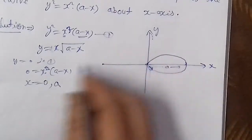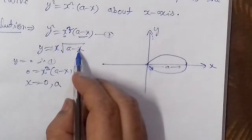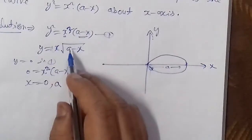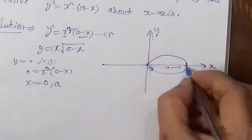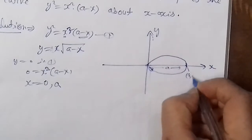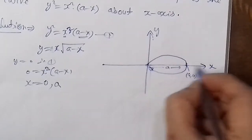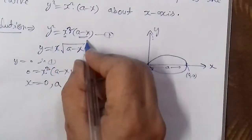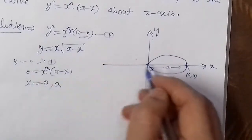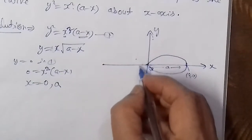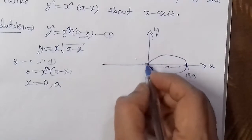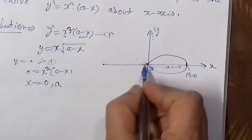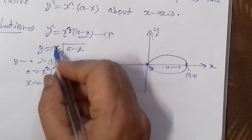We can see that if x is greater than A, then (A - x) becomes negative, making the square root imaginary. So the curve does not exist beyond x = A. For x negative, the square root value is also not real, meaning the curve only exists for 0 ≤ x ≤ A.